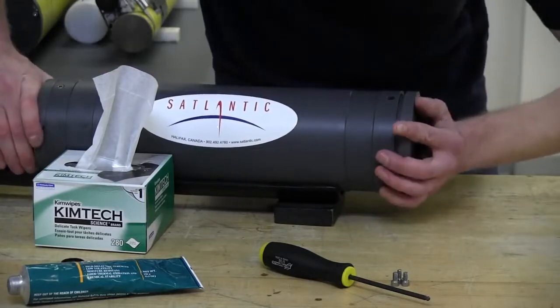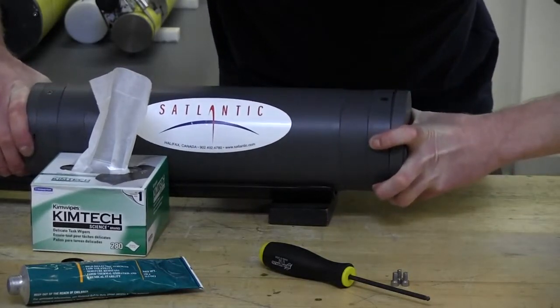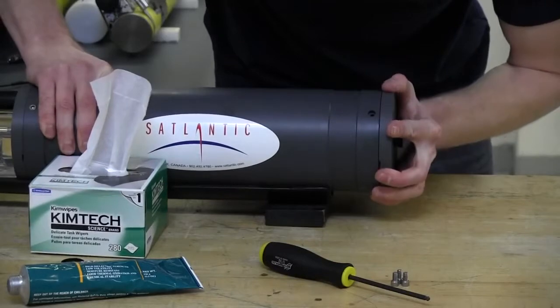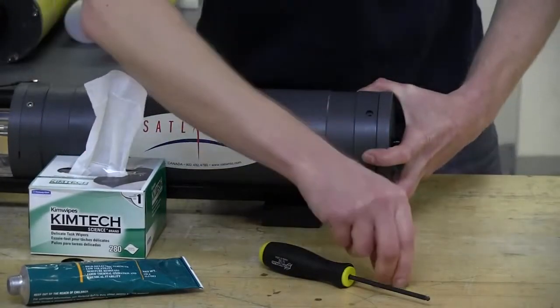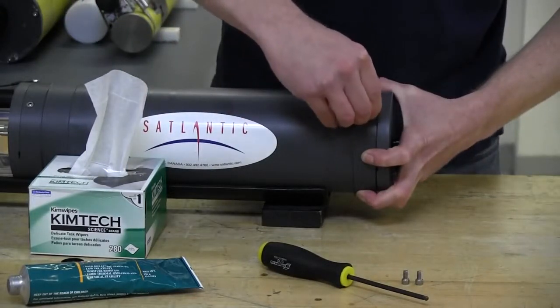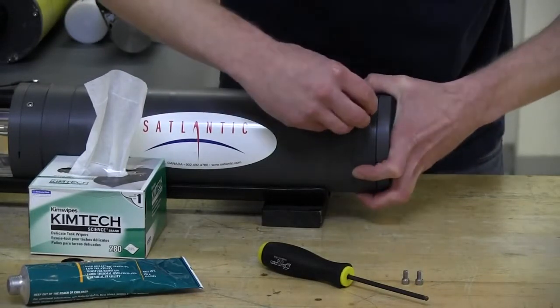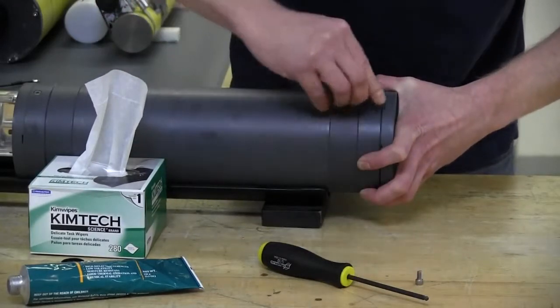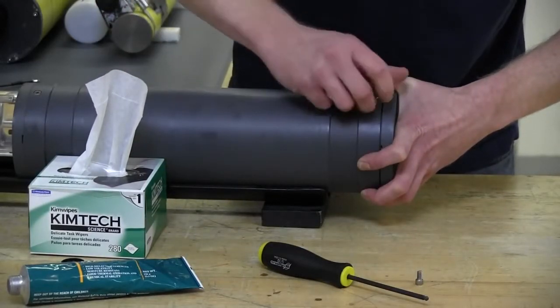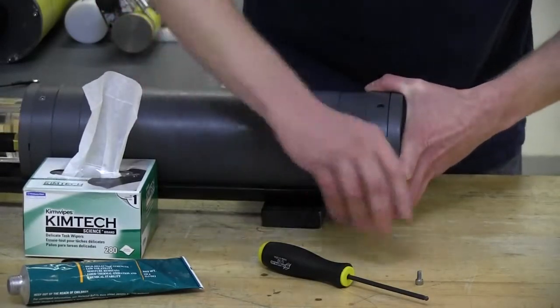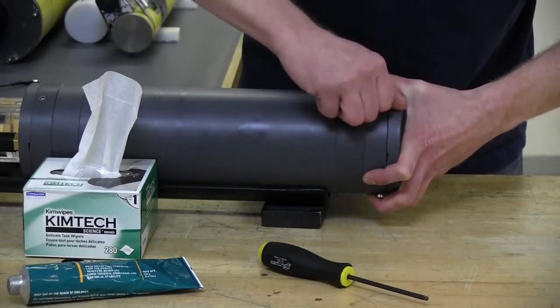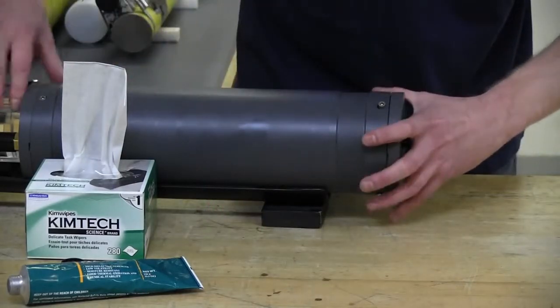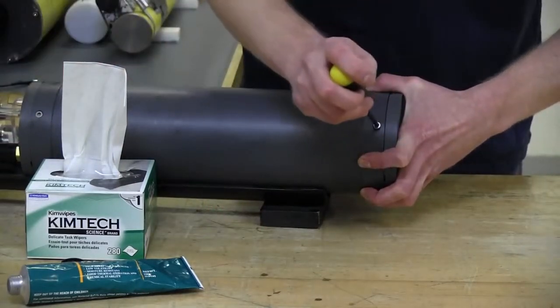Next step, try to evenly apply pressure on the end cap and line up the machine screw holes in the end cap with the holes in the pressure housing. Take your 8/32nd screws and just get them started. If you find that they're not coming in at a 90 degree angle, just stop, back out, and start again. You can run the risk of stripping the screws that are machined into the end cap. We don't want to do that.